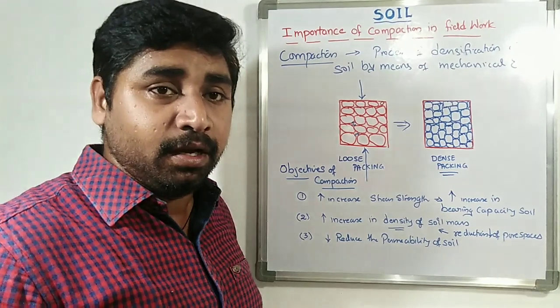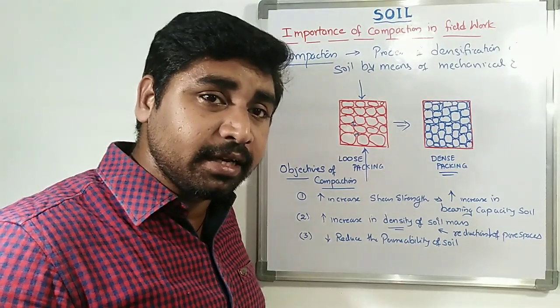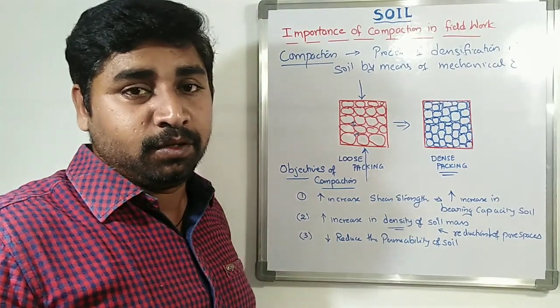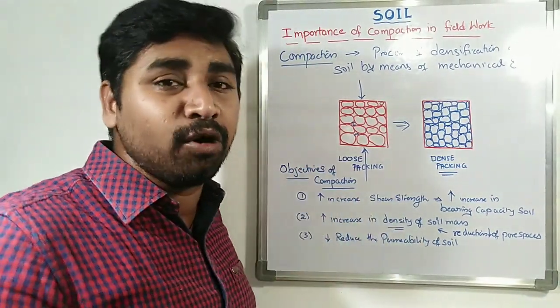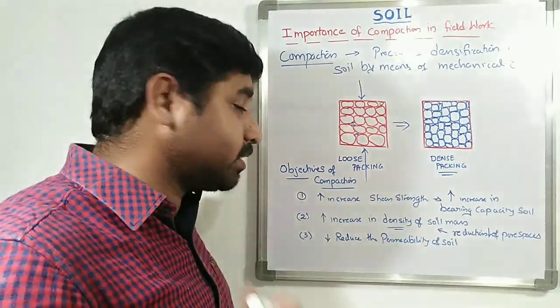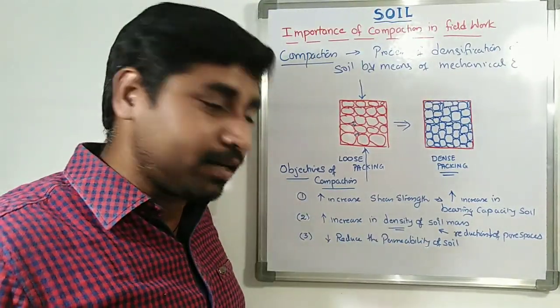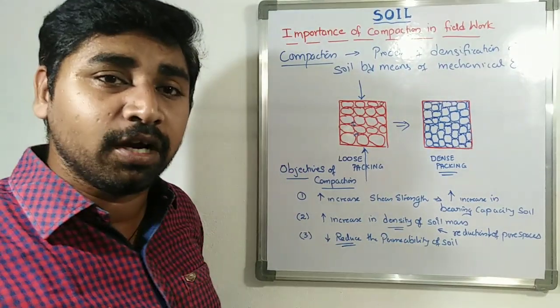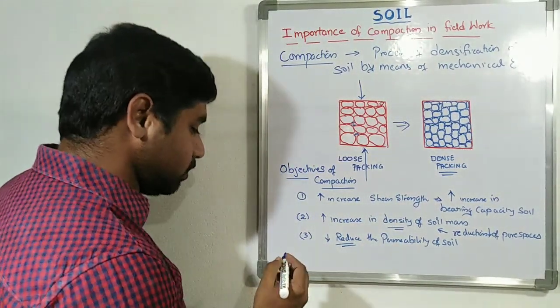In case of earthen dam, the earthen dam what you are constructing, it should be able to resist flow of water. So permeability should be very low in that case. When we are doing good compaction, if the compaction is highly effective, it will definitely reduce the permeability of the soil.